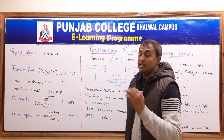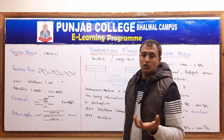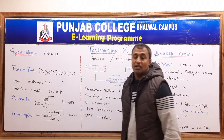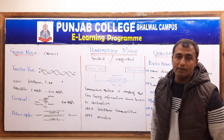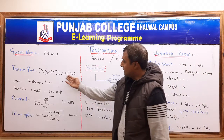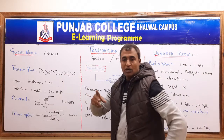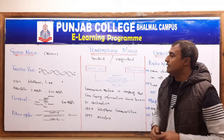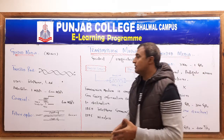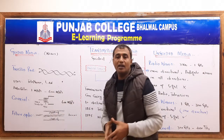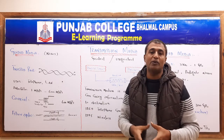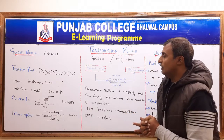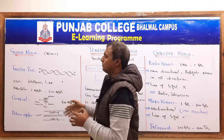In guided media, normally three types of wires are used. The first one is called twisted pair, the second one is called coaxial cable, and the third one is called fiber optic cable. Twisted pair cable — the wires are twisted with each other. Normally this cable is used inside telephones, or in local area networks, in offices, or in labs. In local area networks, we use twisted pair cable.